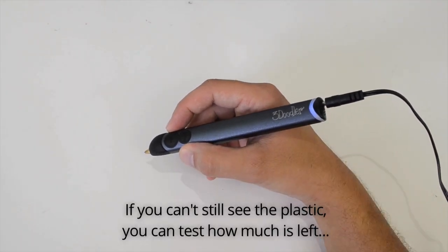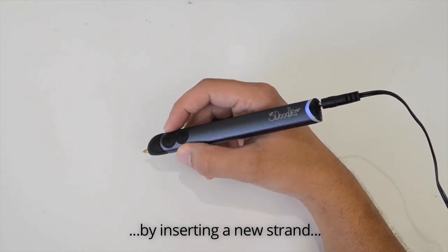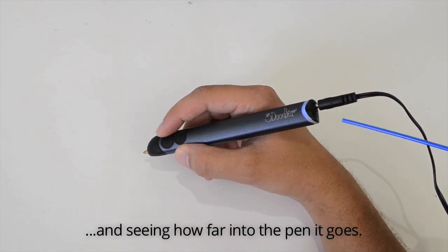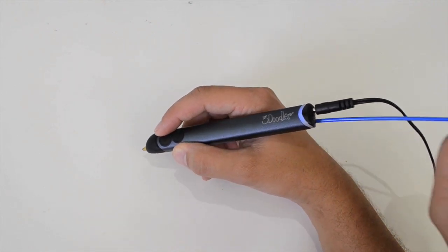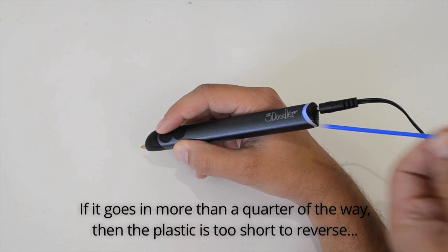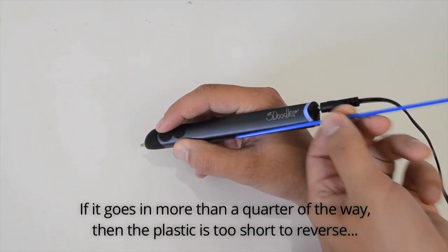you can test how much is left by inserting a new strand and seeing how far into the pen it goes. If it goes in more than a quarter of the way, then the plastic is too short to reverse